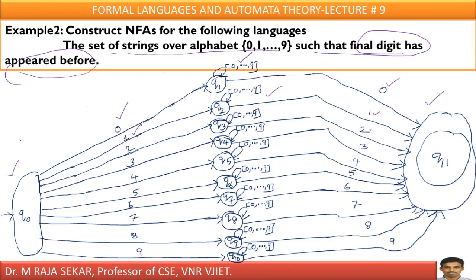Similarly for final digit 1 — it is appearing again here, and in between any digit from 0 to 9 is allowed. What about the number 2? This 2 appears before this 1 — this is final digit 2, and this 2 is also appearing here. In between, any digit from 0 to 9 is allowed. That similar analogy is applicable for the other cases.